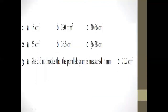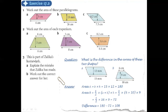Now here are some answers. This is a part of Zalika's homework — explain the mistake Zalika has made. What is the difference between the areas of the two shapes? For the Parallelogram, simply multiply: 15 multiplied by 12 equals 180. For the Trapezium: 10 plus 6 equals 16, multiplied by 9, then divided by 2, giving 72. The difference is 180 minus 72, which equals 108.